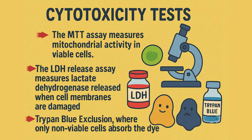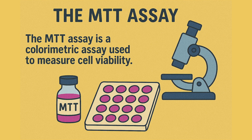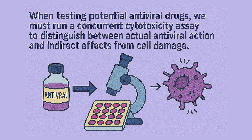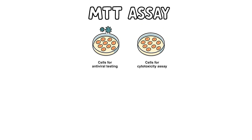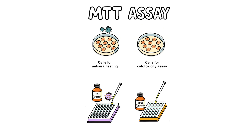Let's take a closer look at the MTT assay, one of the most widely used methods. When testing potential antiviral drugs, we must run a concurrent cytotoxicity assay to distinguish between actual antiviral action and indirect effects from cell damage. We begin by duplicating the exact same cells used for antiviral testing, but for our cytotoxicity plates, we don't introduce any virus. We then apply the test compounds to both our cytotoxicity and antiviral plates at identical concentrations and for the same duration.